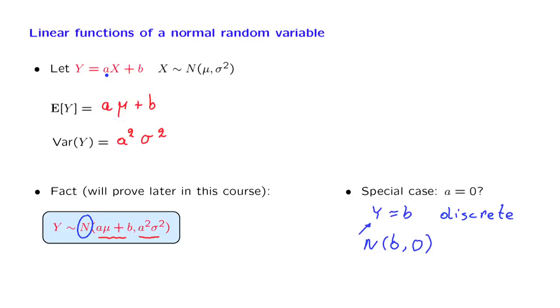Now that we have the definition and some properties of normal random variables, the next question is whether we can calculate probabilities associated with normal random variables. This will be the subject of the next segment.